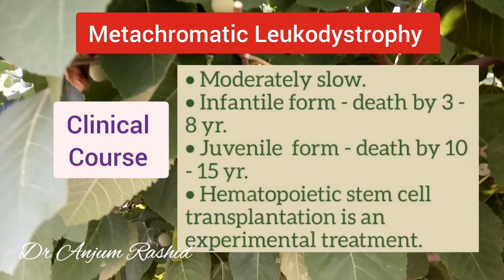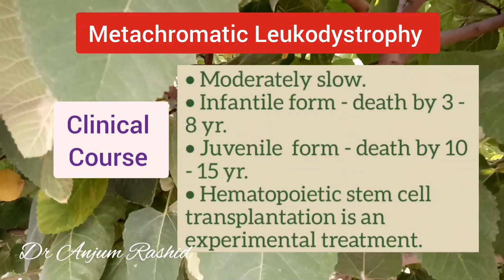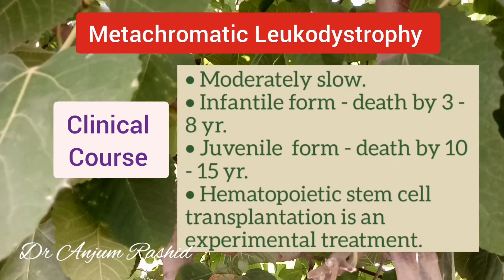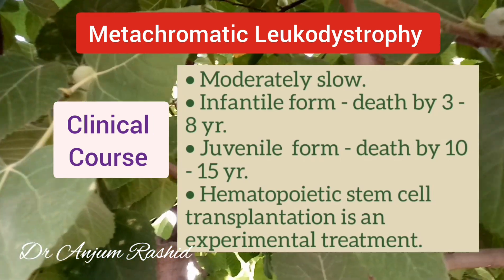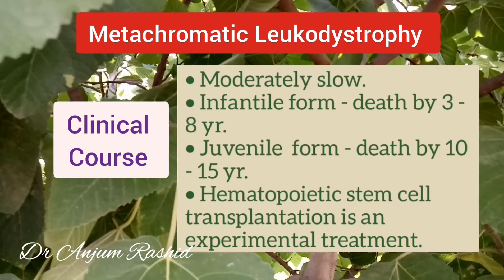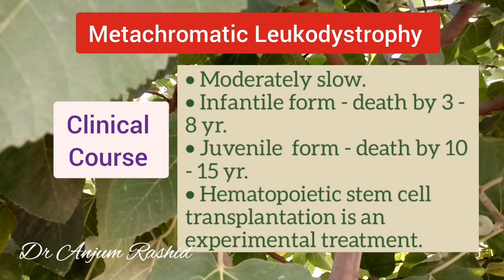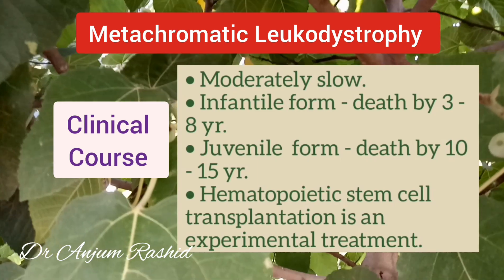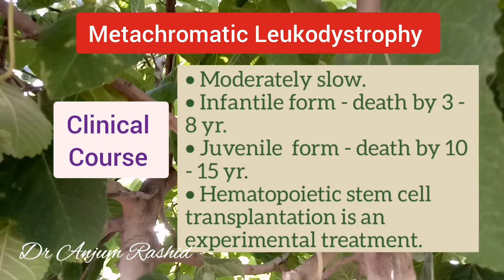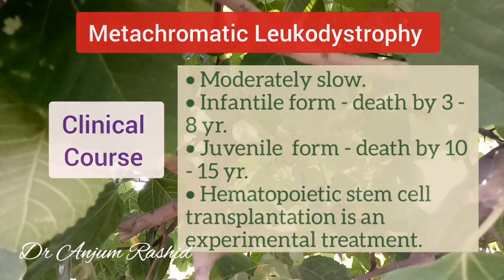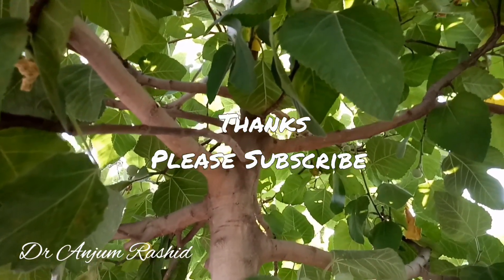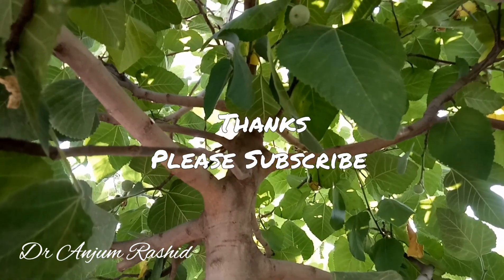The clinical course of metachromatic leukodystrophy is moderately slow. In the infantile form, death usually occurs by 3 to 8 years of age, and in the juvenile form, death can occur by 10 to 15 years of age. Hematopoietic stem cell transplantation is currently an experimental treatment.